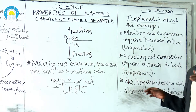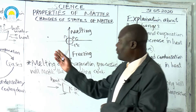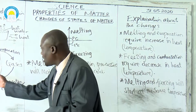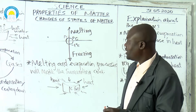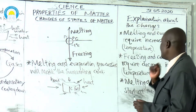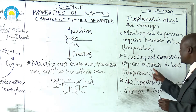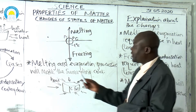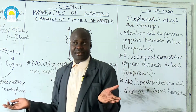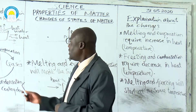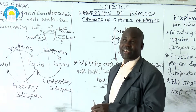You may find in an exam the question: which of the following processes of changes of states of matter do not need heat to change? The answer will be freezing and condensation, because for the gas to go back to liquid, you don't need heat — you need to reduce heat. Then for liquid going back to solid, they also do not require heat.